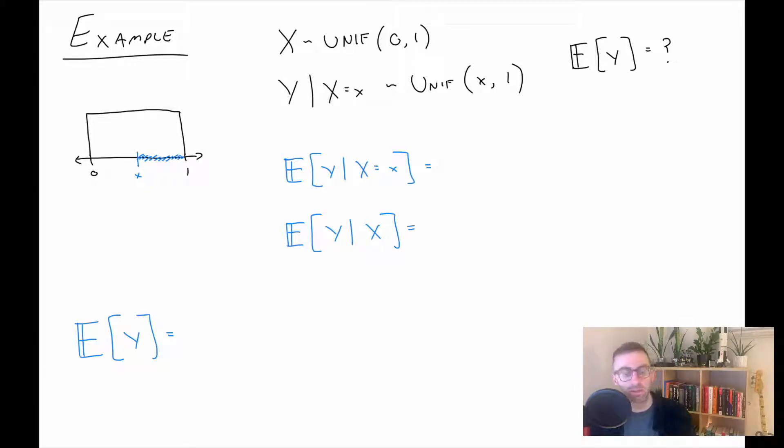So I have these two different conditional expectations written down here. It shouldn't be too hard to see that once we know what X is, the expected value of Y given that X is just the midpoint between X and one. So here we have (X + 1)/2, here we have (X + 1)/2. And to be really clear, this is a small x, this is a large X.